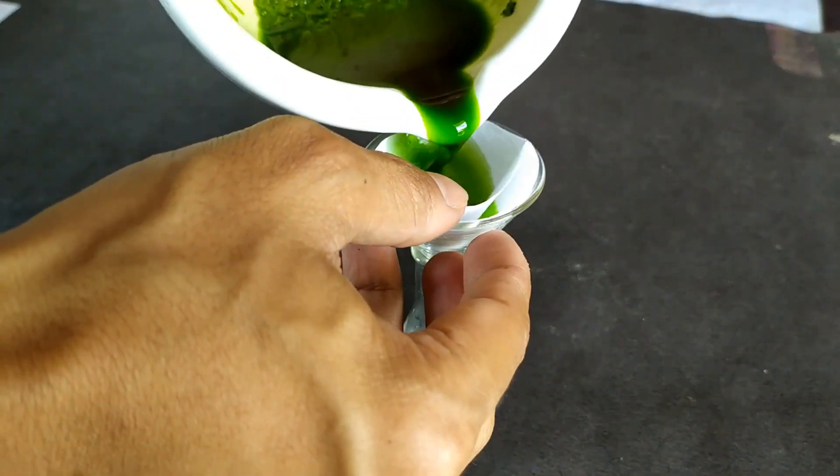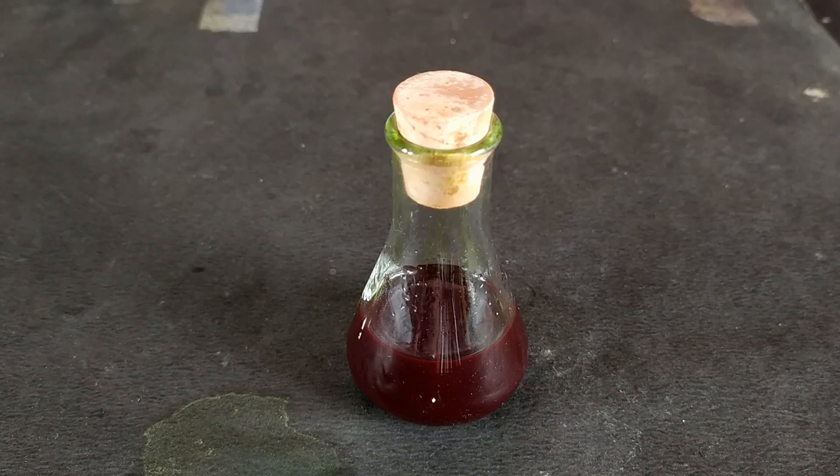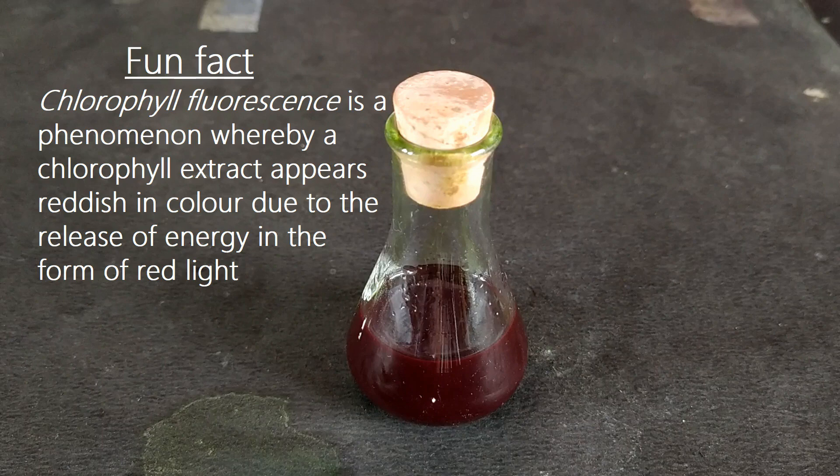Filter the extract and collect the supernatant in a small container. Keep this extract aside and proceed with preparing the chromatography paper and chamber.